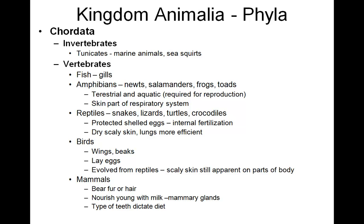Now we have our birds — these are my winged reptiles that evolved out of the dinosaurs that survived extinction — and birds have beaks and lack teeth. Birds also lay eggs, and they also have the scaly skin as the reptiles do, still apparent on parts of their body. And then lastly, we have our mammals, which bear fur or hair. They nourish their young with milk, with most having mammary glands, and their type of teeth dictate their diet — if they have more molars they will be more herbivorous, or more canine tearing teeth means meat eaters.